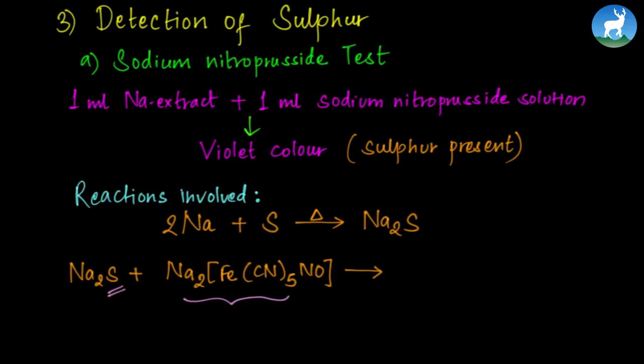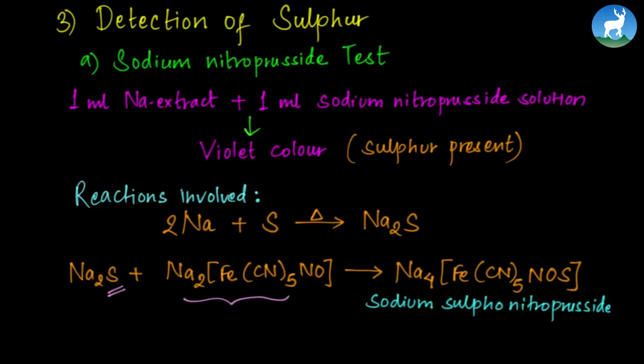This forms sodium sulfonitroprusside compound, which has a violet color. This violet color confirms the presence of sulfur in the organic compound.